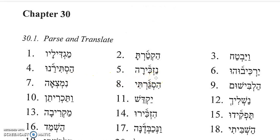Number five, Nazkira. It has Zakar — to remember — with a prefix Nun and a suffix Kamats-He. That would make it a first common plural cohortative: let us remember, or more literally, let us cause to remember — let us mention.